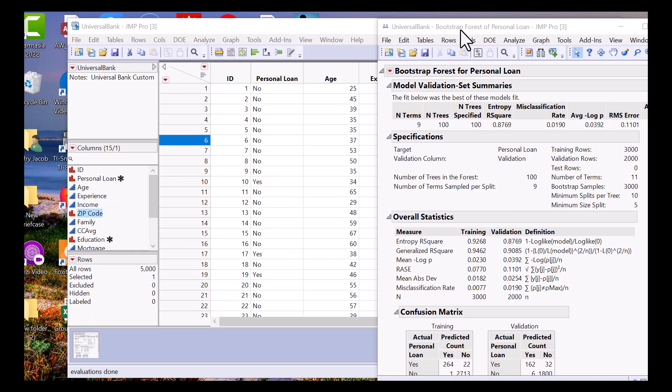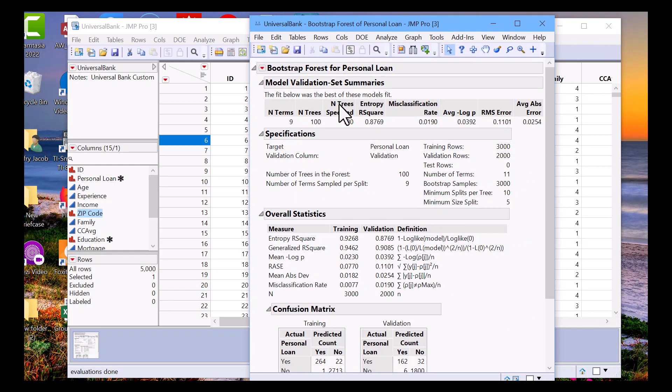So we have our output here. Among the various candidates, the model did choose nine terms to be considered for a split. What that means is that at each split, nine of the eleven predictors are randomly chosen. Among those, the best predictor to be split is evaluated and the split happens at that predictor. Again, at the next split, the process gets repeated, and this will happen throughout the duration of the growth of the tree.